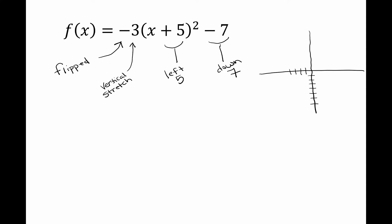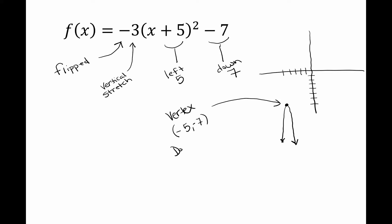So if I were to graph this parabola, it would be seven units down and five units to the left — that's where our vertex will be. Because the negative is in the front, it's going to be flipped and skinnier than normal. This is a rough sketch of what I see in this polynomial, and I can tell all of this just by looking at it. If you graphed this in a graphing calculator, it would look just like this — no calculations needed.